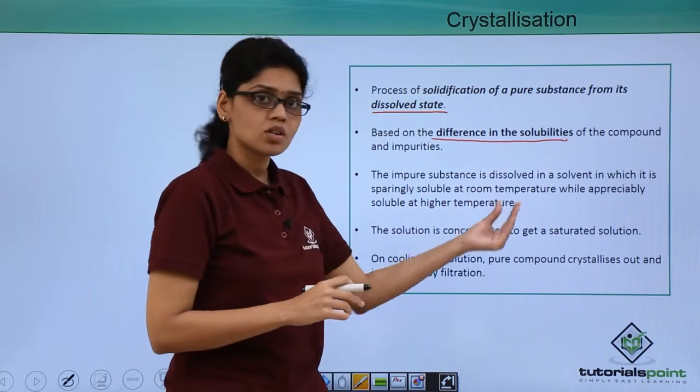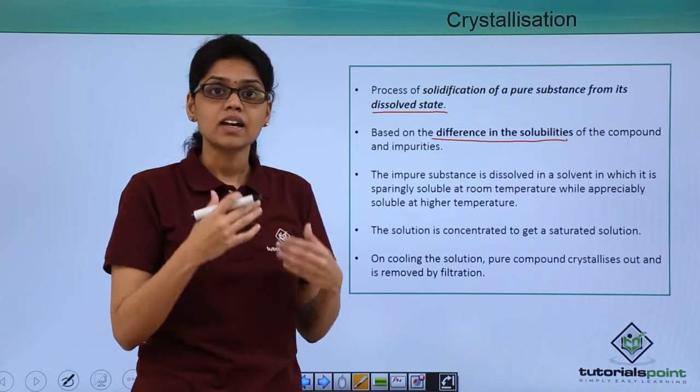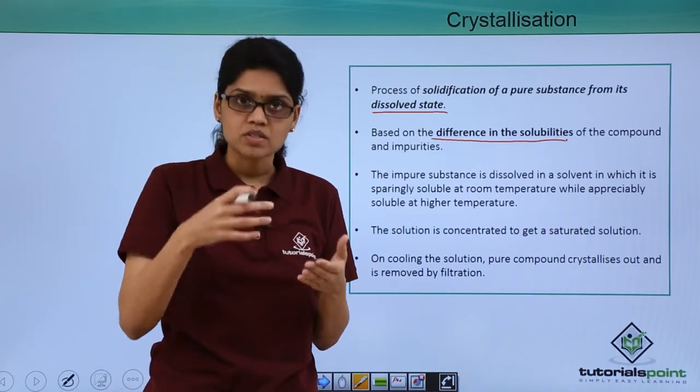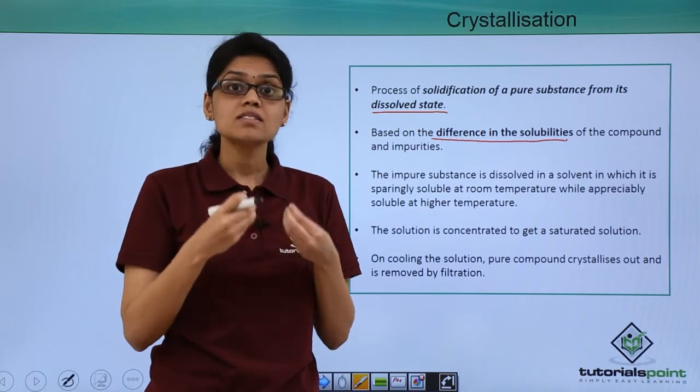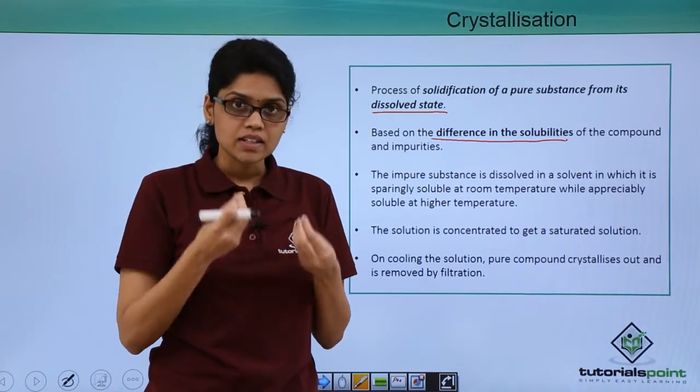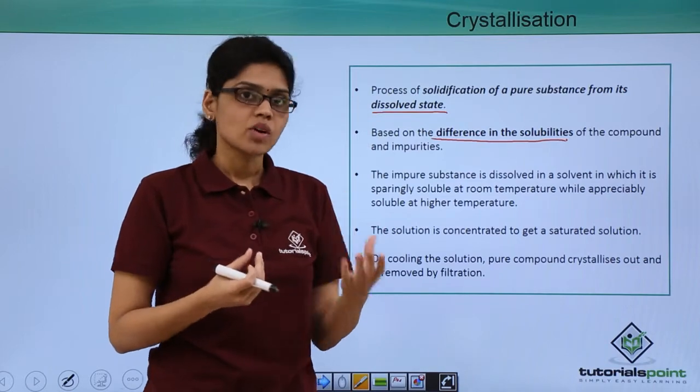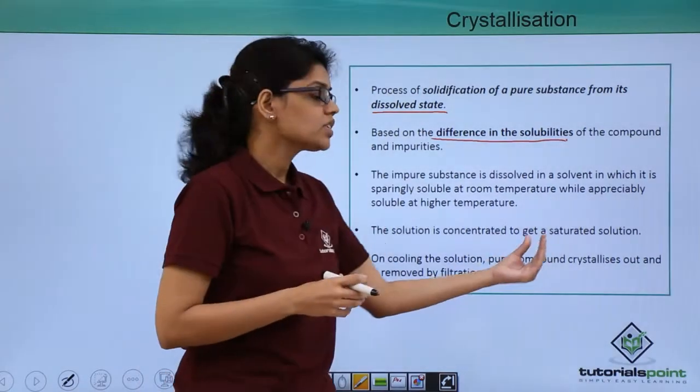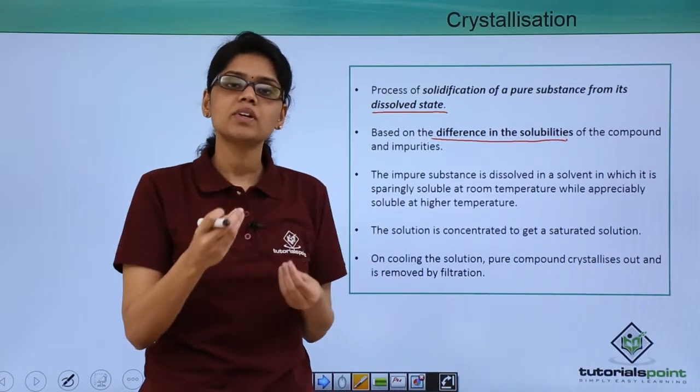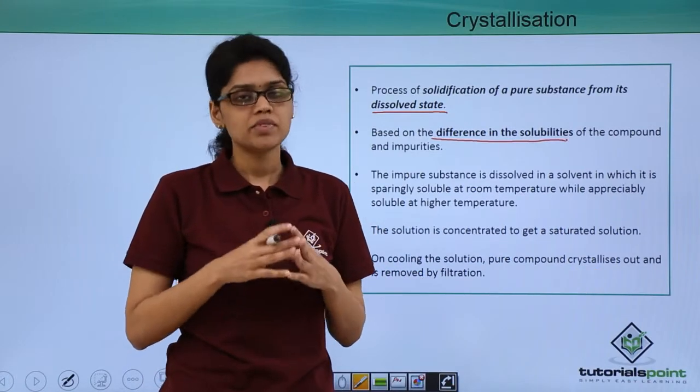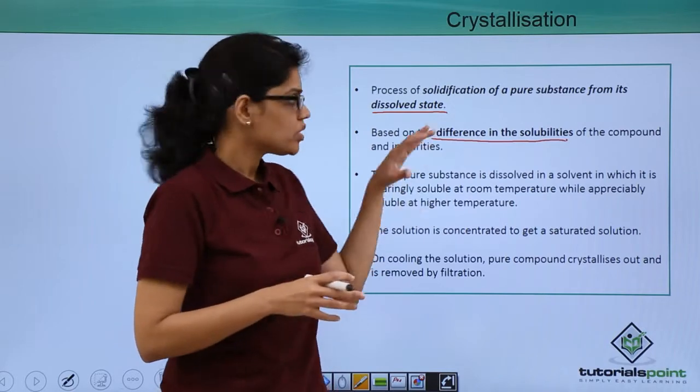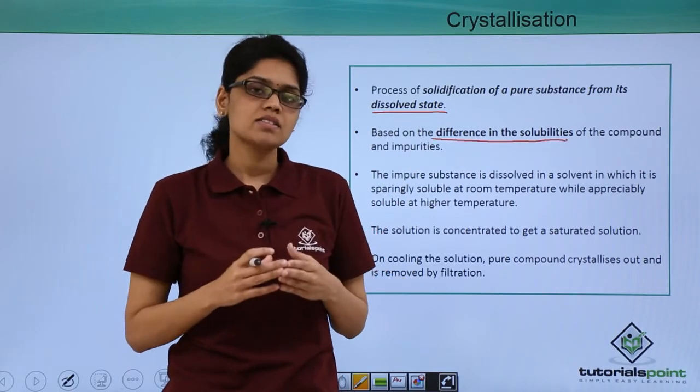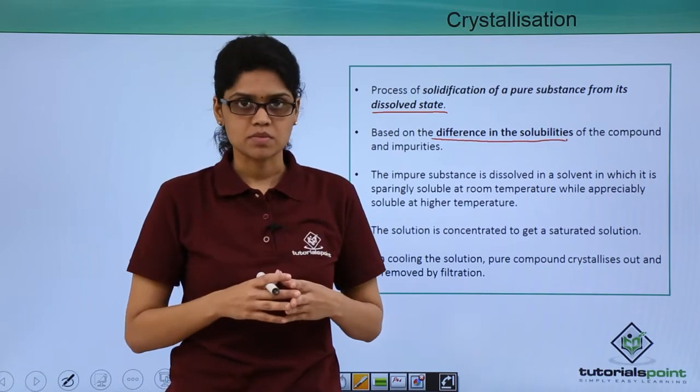The impure substance is dissolved in such a solvent and the solution is highly concentrated. We saturate the solution or increase the concentration to the maximum possible, then heat the solution followed by cooling it. On cooling, pure compound crystallizes out and the impurities are left behind, which can be separated by filtration. The process of crystallization can be broken down into four major steps.